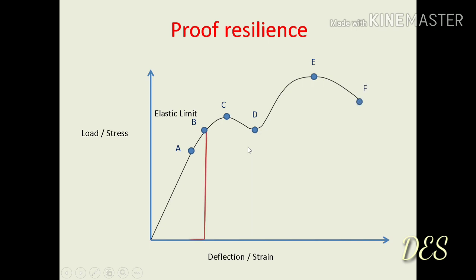This area represents the proof of resilience — the strain energy at this point. The strain energy can be calculated at various points between O to B. Proof of resilience can be defined as the maximum amount of strain energy that can be stored within the body when it is loaded within the elastic limit.